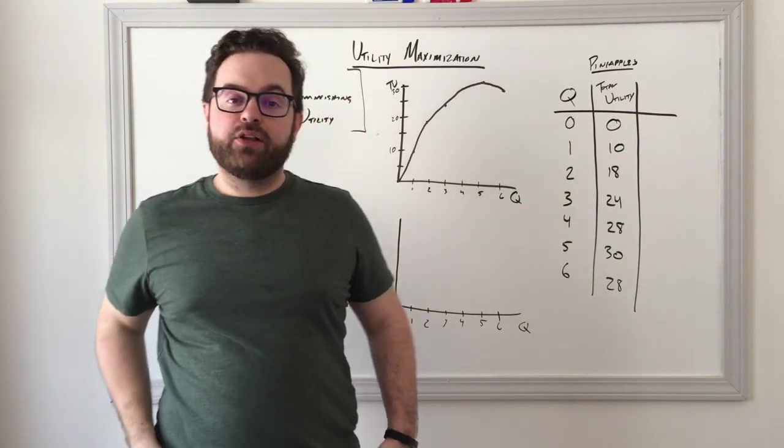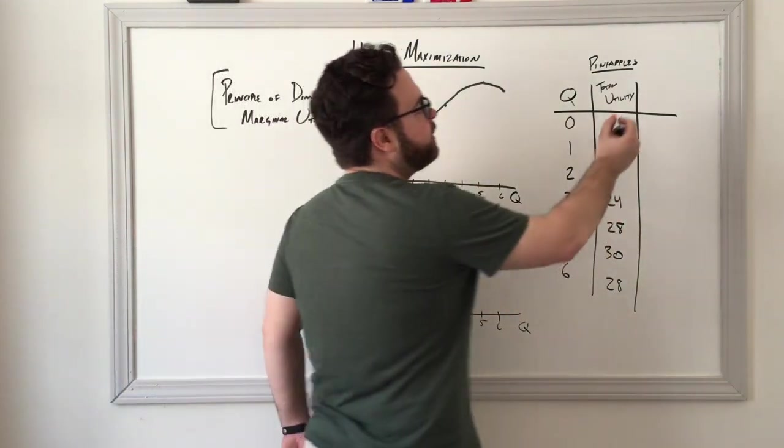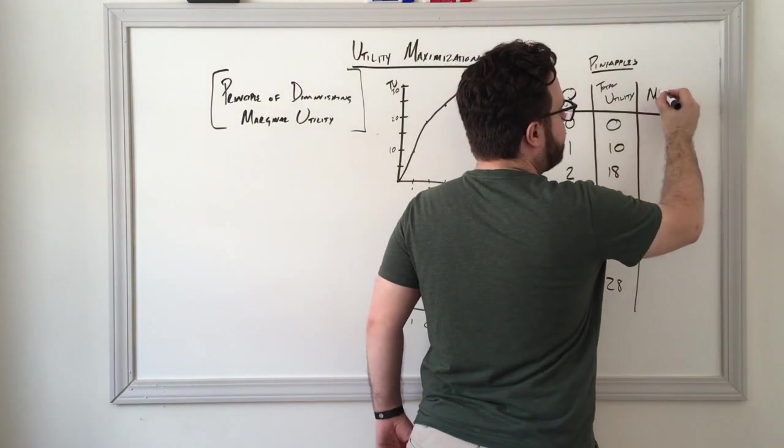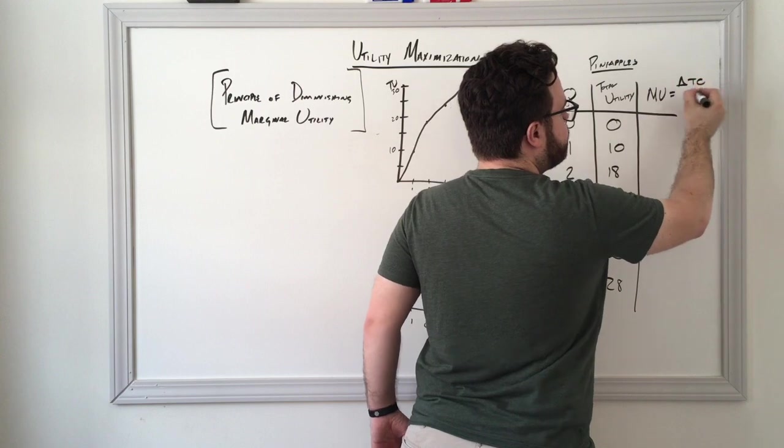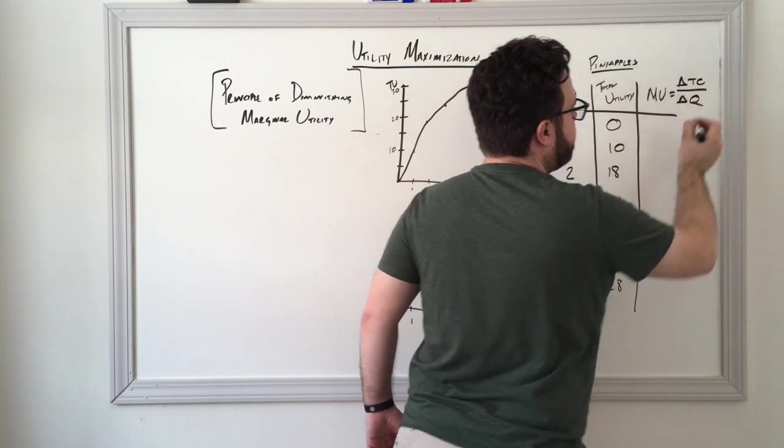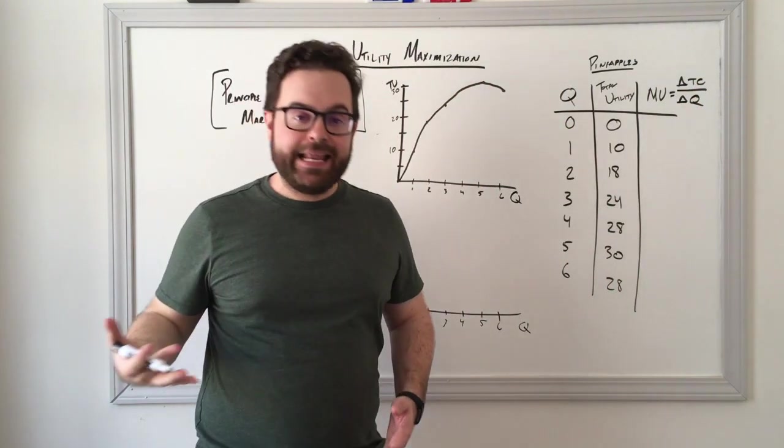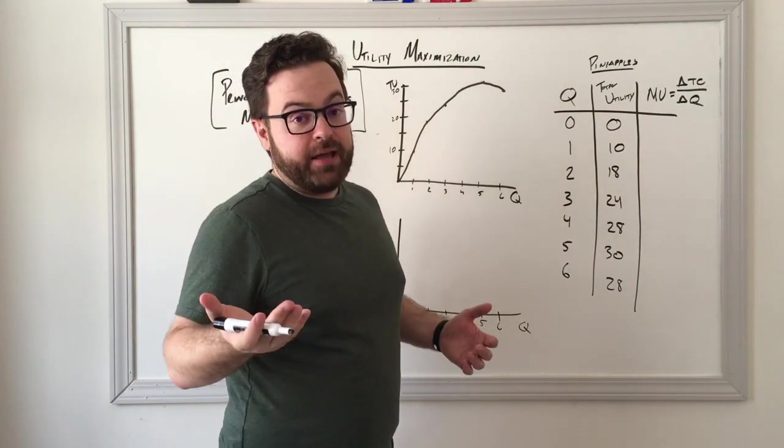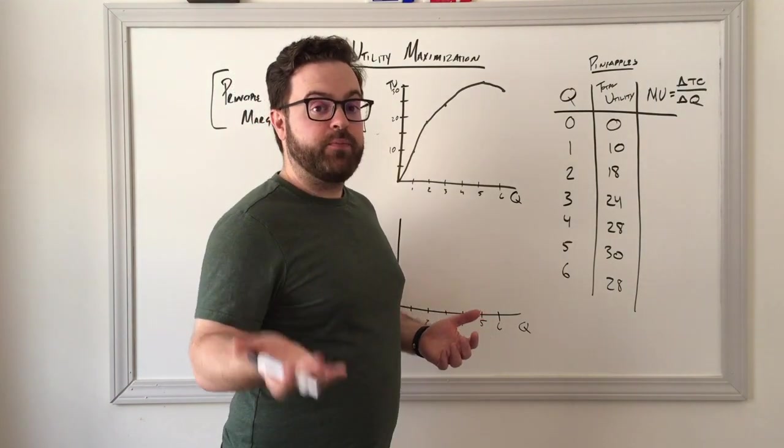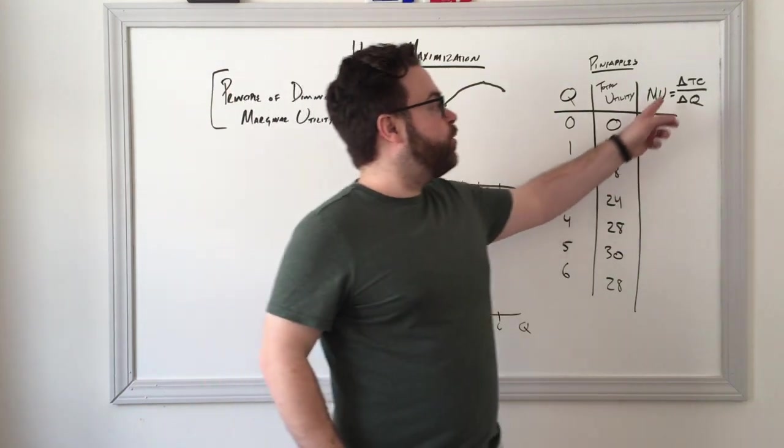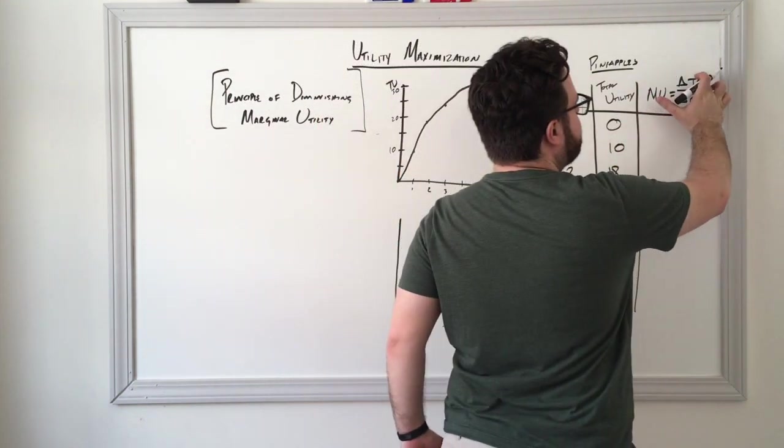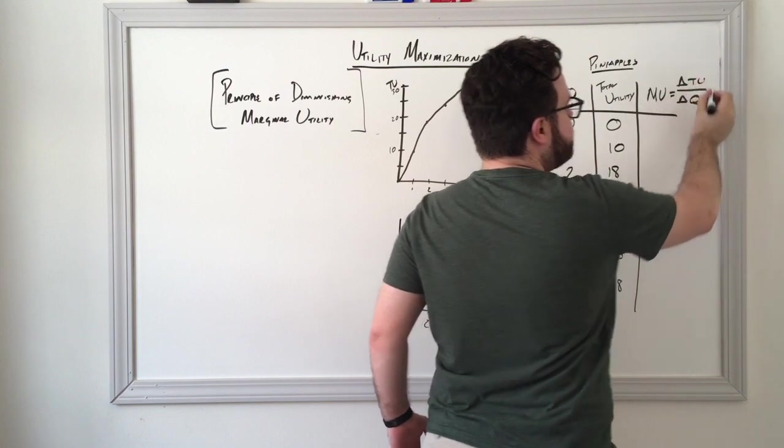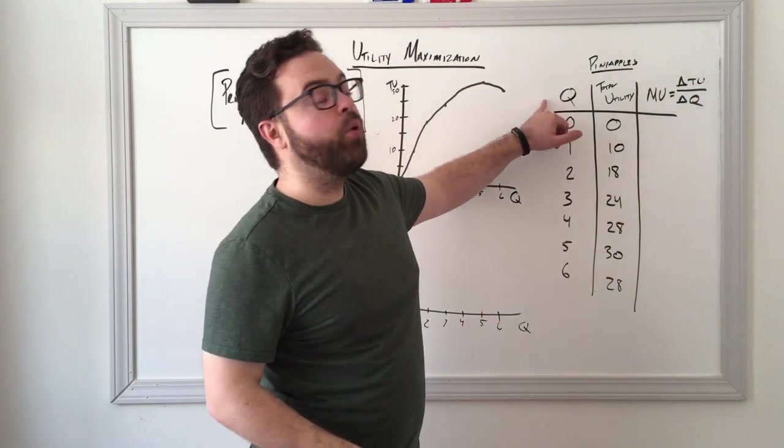Now an easier way to look at that is by calculating the marginal value, in this case marginal utility, so that would be the change in total utility over the change in quantity. Marginal of anything, marginal cost is the best example that's going to show up often on the exam. It's always going to be the change in something. In this case, it's total utility divided by the change in quantity.